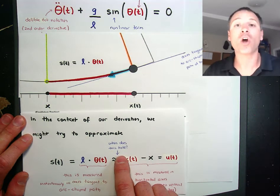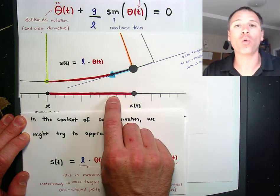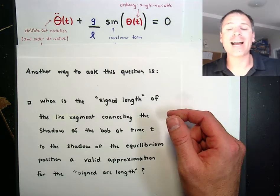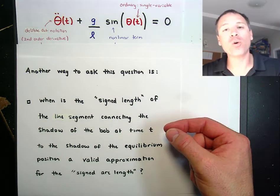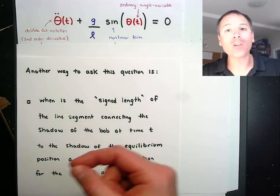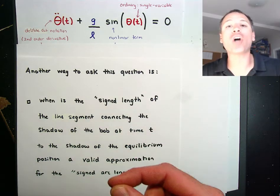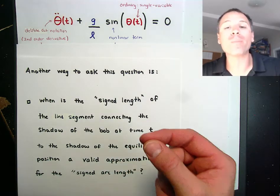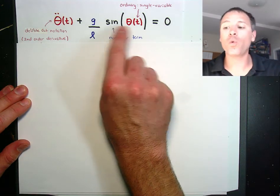The questions we'd have are: one, when is that projection legitimate — when does the approximation actually hold water? And two, if we do that, does that simplify this equation? In other words, when is the signed length between the shadow of the bob at any time t and the shadow of the equilibrium position along the horizontal axis a good approximation for the signed arc length? Both measurements can be negative or positive depending on the position of the bob at any time t.